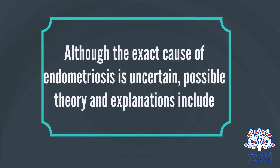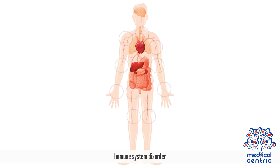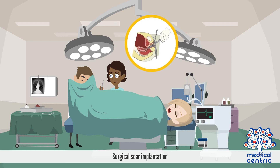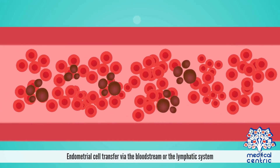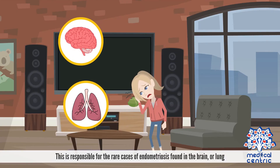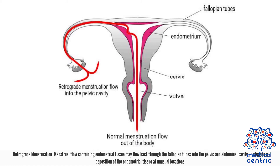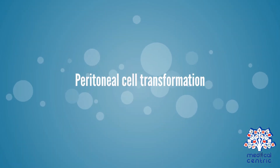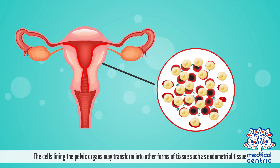Although the exact cause of endometriosis is uncertain, possible theories and explanations include immune system disorder, surgical scar implantation, and endometrial cell transfer via the bloodstream or the lymphatic system — responsible for the rare cases found in the brain or lung. Retrograde menstruation occurs when menstrual flow containing endometrial tissue flows back through the fallopian tubes into the pelvic and abdominal cavity, leading to deposition of endometrial tissue at unusual locations. Peritoneal cell transformation refers to cells lining the pelvic organs transforming into other forms of tissue, such as endometrial tissue.